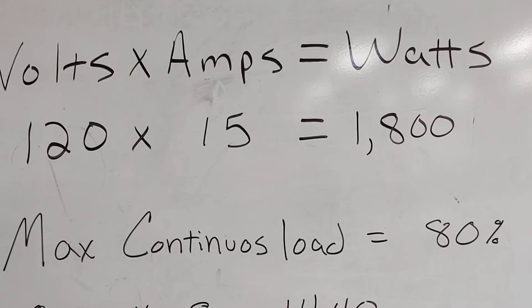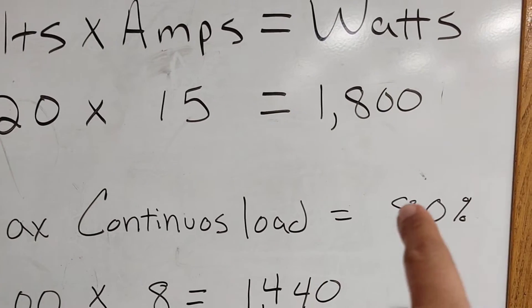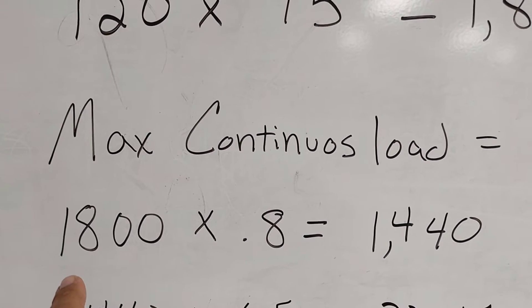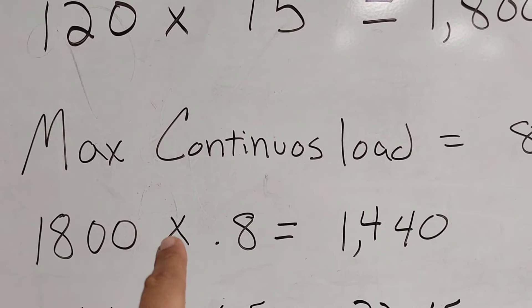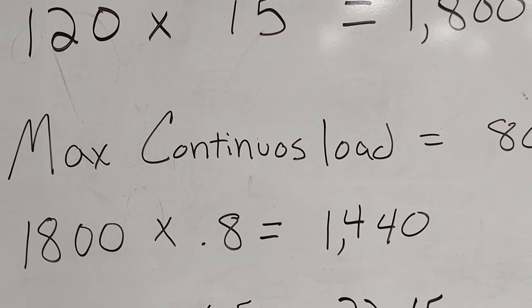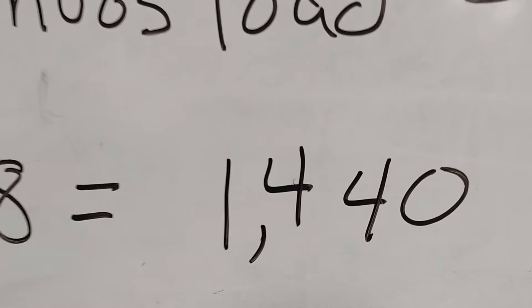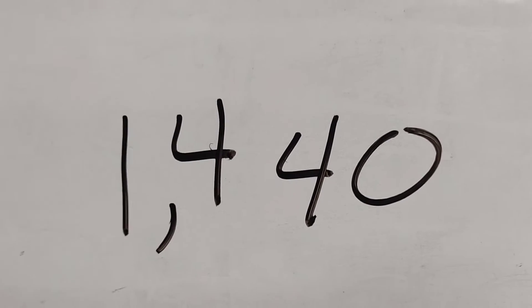Now we have our watts, but there is one rule we need to know: for continuous load, we can only be at 80%. With our maximum continuous load only being allowed to be 80%, we want to take our 1,800 watts and multiply that by 0.8, which gives us 1,440 watts. That's the number we're going to use to calculate how many lights we can put on that circuit.